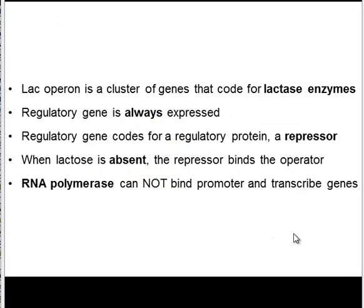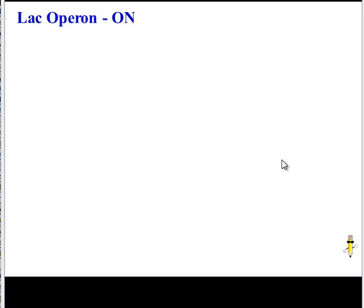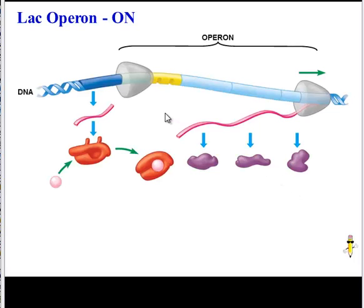However, let's say that you just ate a big bowl of ice cream, and now there is lactose all over your digestive system — your bacteria are surrounded by it. Well, now some lactase enzymes would be kind of useful. So here's what happens. Same old operon: here's the lactase genes, here's the operator, there's the promoter, here's the regulatory gene.